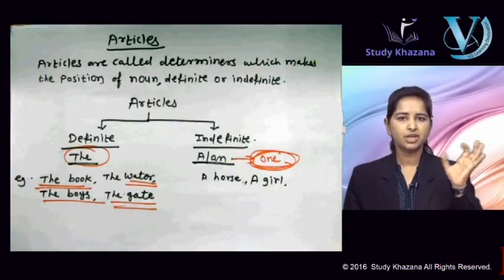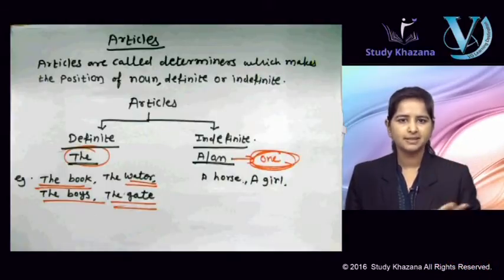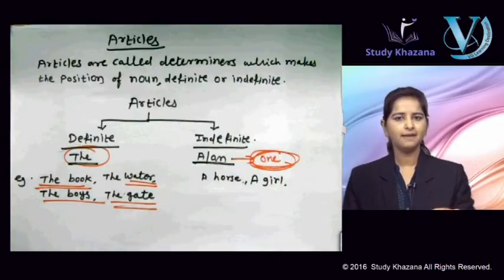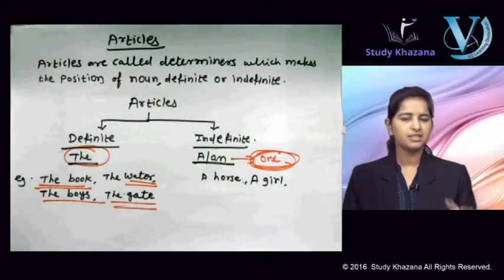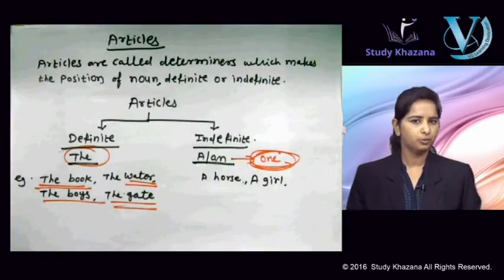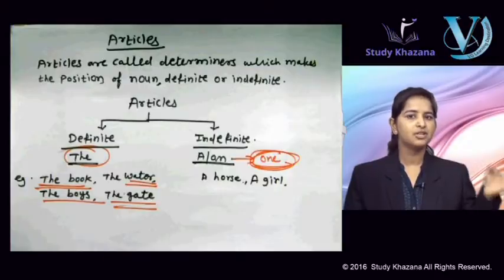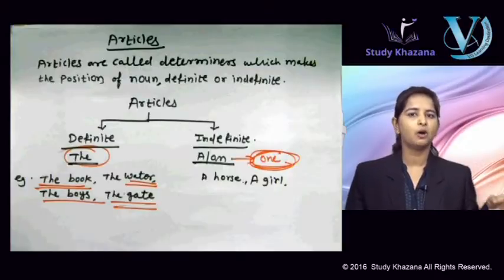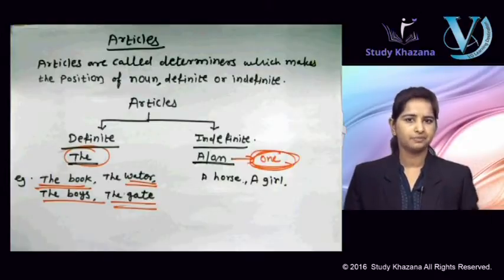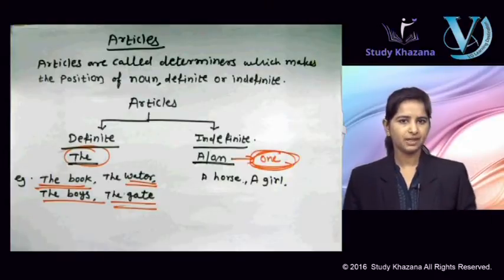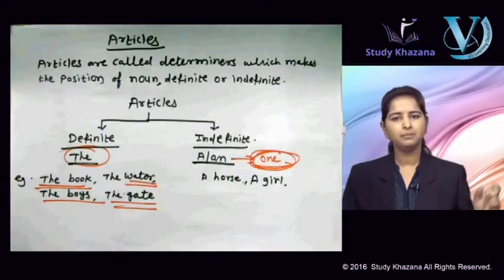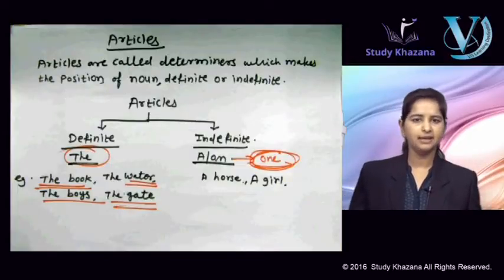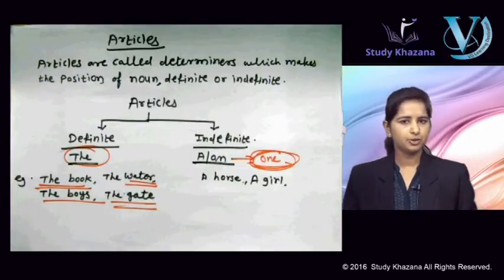When we are talking about generalized things, we use 'a' or 'an'. Aur jab countable noun ki baat ki jaaye — countable noun is jisse hum count kar sakhe — and which denotes one, tab hum article 'a' ya 'an' ka use karenge.